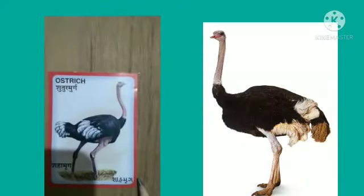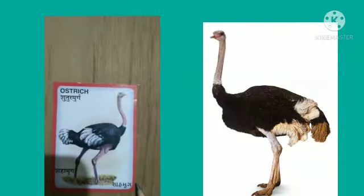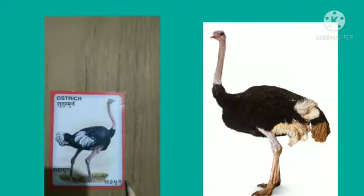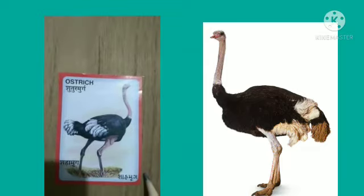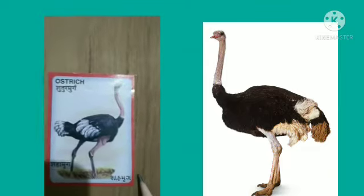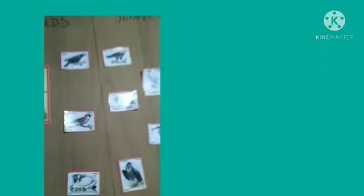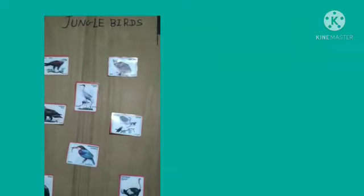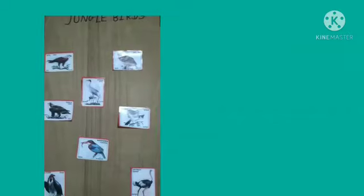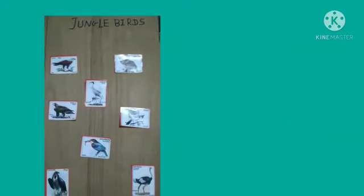Ostrich — Ostrich is a jungle bird. Are you understanding? There are two categories of birds: farm birds, which live in the farm and we can see them there, and jungle birds, which live in the jungle. Thank you!